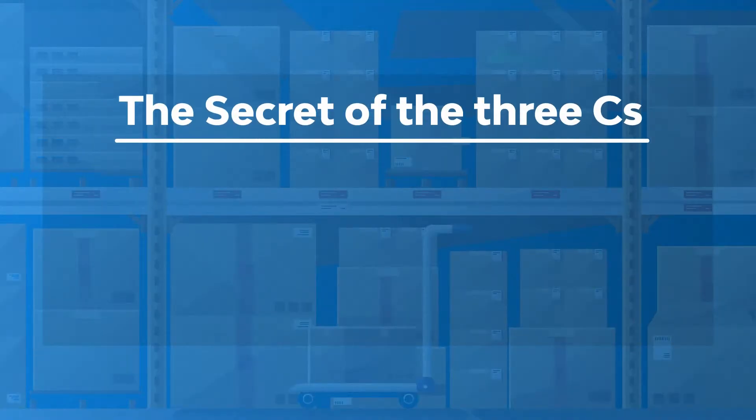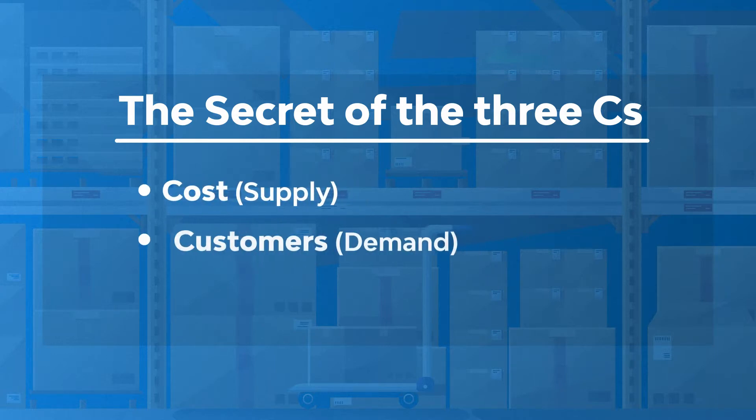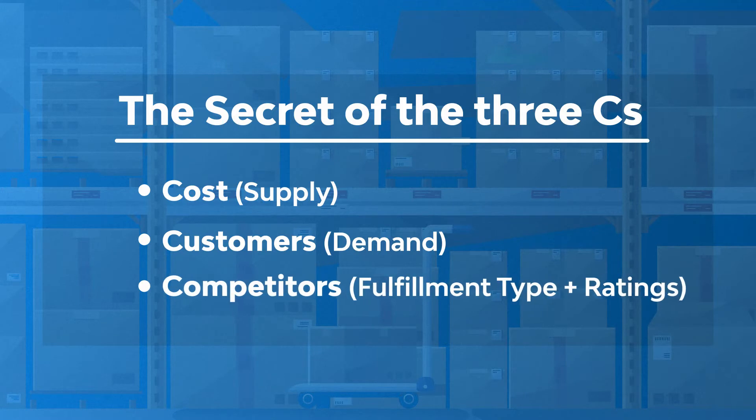So when setting your price, consider these three C's. First, know your costs. Second, know the demand from customers. Third, know your competitors — what are their different fulfillment types, store ratings and reviews? How are they compared to you? If you have many good ratings, you're offering more value with trustworthy service recognized by other buyers. You might be able to price higher. If you have fewer ratings than others, you will likely compete at a lower price.